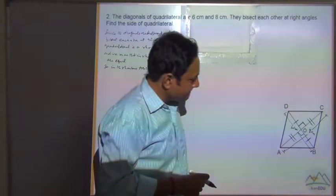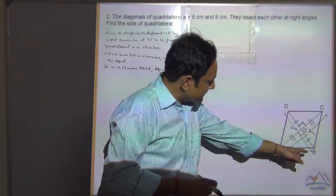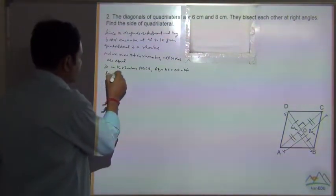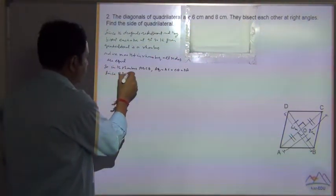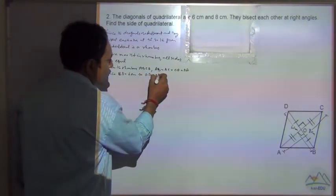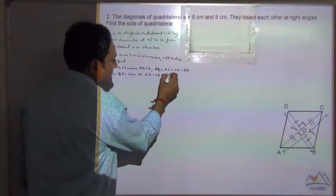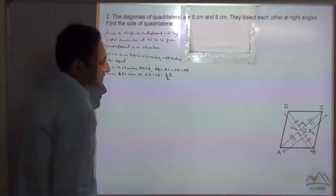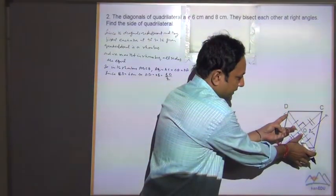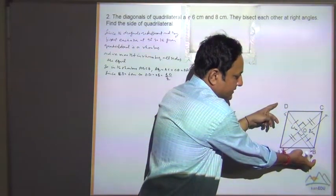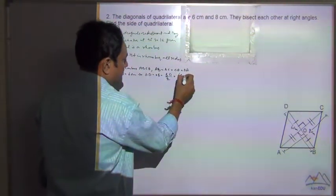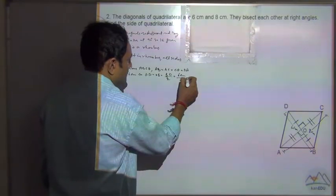And since BD is equal to 6cm, OD is equal to OB is equal to BD divided by 2. Because these two are equal, it means this plus this is equal to total distance divided by 2, which is 6cm divided by 2, equal to 3cm.